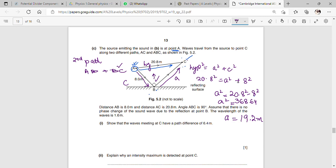So you know the value of A now. Now let's talk about question number 1. What are they saying? Sure that the waves meeting at C, these waves at C.